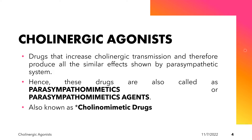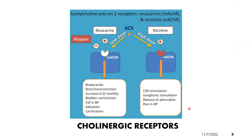Before discussing these drugs directly, let's review a few details about cholinergic receptors and how they work. Acetylcholine acts as a mediator at both autonomic ganglia and parasympathetic postganglionic fibers. The same mediator acetylcholine produces different actions because its receptors are different: acetylcholine receptors at the ganglia are nicotinic acetylcholine receptors, whereas at the parasympathetic postganglionic fibers they are muscarinic acetylcholine receptors.